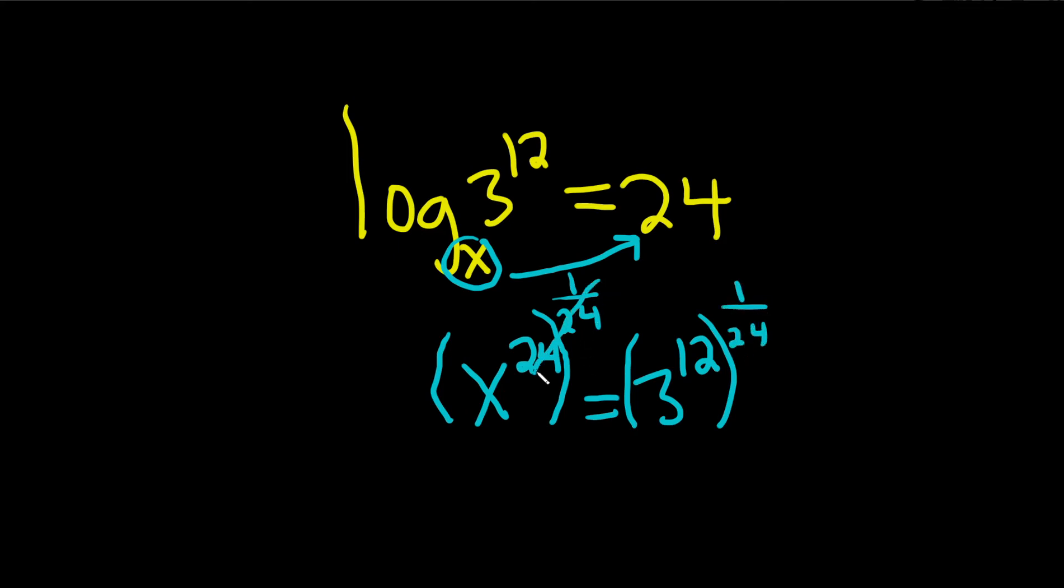And then these cancel, so we get x equals, and what happens here is you basically multiply just like we did here. 1 over 24 times 24 is 1. Here we get 3 and then 12 times 1 over 24 is just 12 over 24.